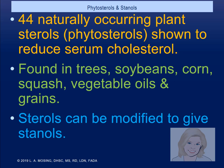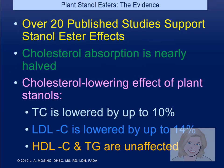There are phytosterols and stanols — 44 naturally occurring phytosterols. Phytosterols are plant sterols and will reduce serum cholesterol when part of a healthy lifestyle. They're found in squash, soybeans, and corn, and can be modified to give us a stanol. Over 20 human studies show that cholesterol absorption is nearly halved on a healthy diet, with a cholesterol-lowering effect reducing total cholesterol up to 10%. LDL cholesterol is lowered by 14%, while HDL cholesterol and triglycerides are not affected.